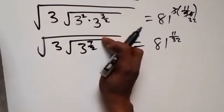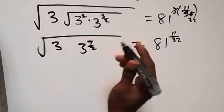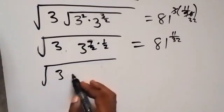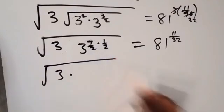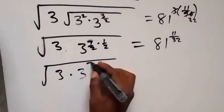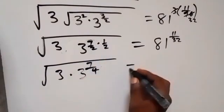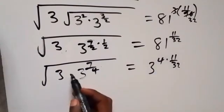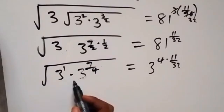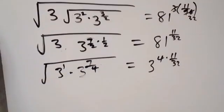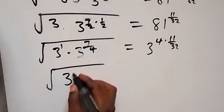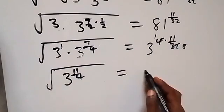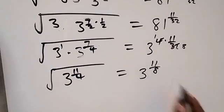This root means multiply the power by half. So if we remove this root, we multiply the power by half: root 3, multiplied by 3 raised to power 7 over 4 — since 2 times 2 gives 4 — equals 81 expressed as 3 raised to power 4, times 11 over 32. Adding the powers on the left — 3 raised to power 1 plus 7 over 4 — gives root of 3 raised to power 11 over 4, which equals 3 raised to power 11 over 8.